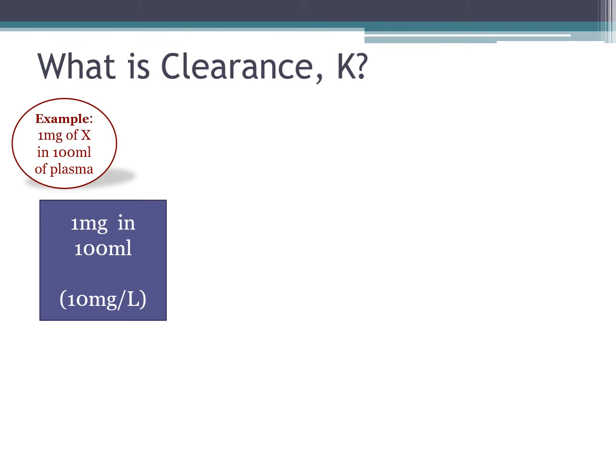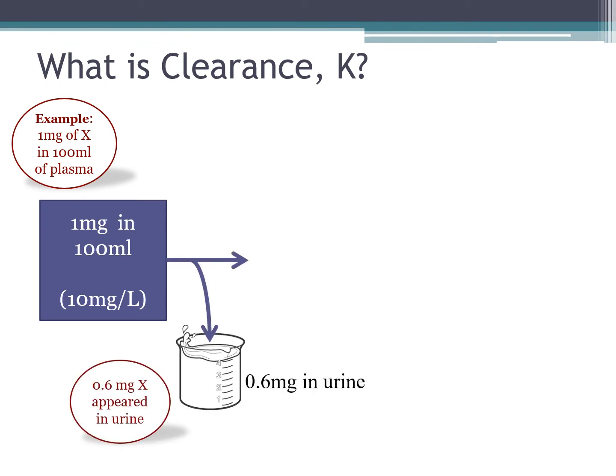What is clearance K? Let's look at this example of having 1 mg of a substance in 100 ml of plasma. This will give us a concentration of 10 mg per liter of the substance. Let us say if 0.6 mg of the substance appeared in the urine from the original 1 mg, in actual fact the plasma would have 0.4 mg in 100 ml remaining, and that would be 4 mg per liter.